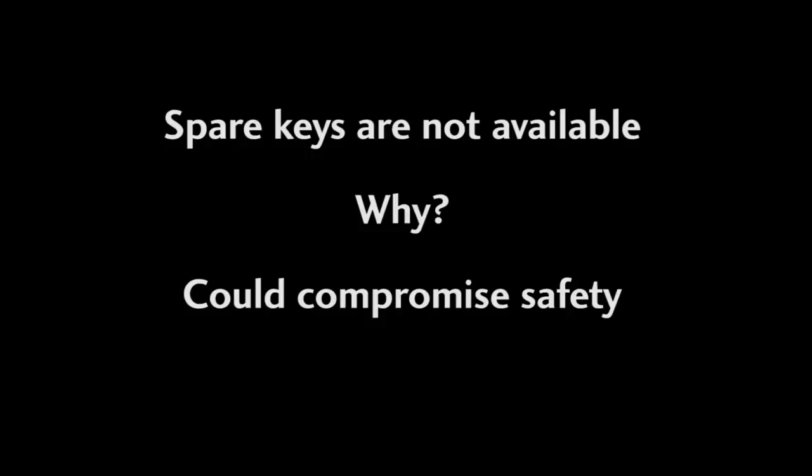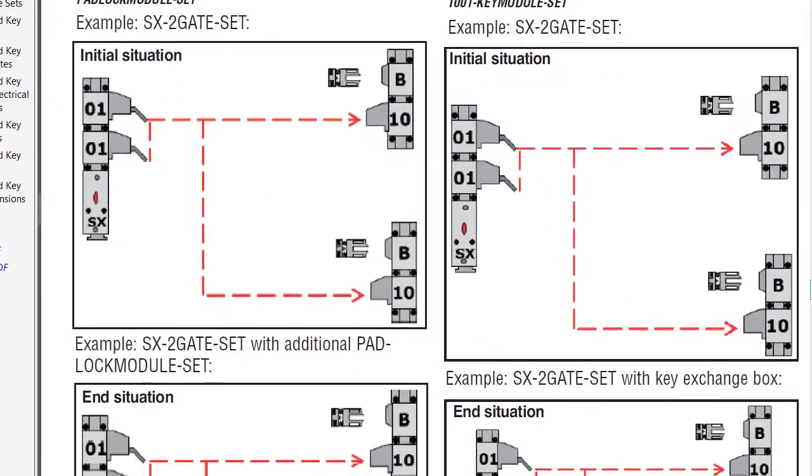The best way to visualize a trapped key system is to draw up a key transfer plan. There's lots of examples like these in the catalog pages. This one shows a standard two gate system.